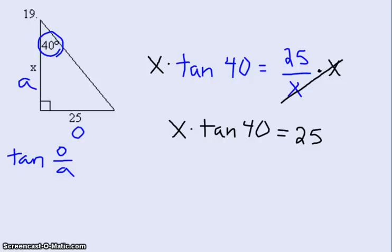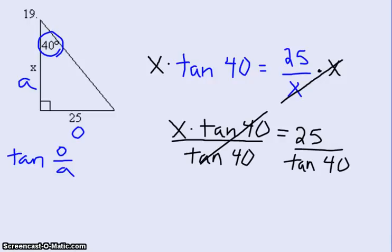I still want to get the X alone, so I'm going to have to move the tangent of 40. What is the tangent of 40 doing to the X? It's multiplying it. So to get rid of it, we're going to do the inverse and divide both sides by the tangent of 40. On the left-hand side, the tangents of 40 cancel, and now you have a new skill to learn on your calculator. You have to do 25 divide by the tangent of 40. You will end up getting 29.8.